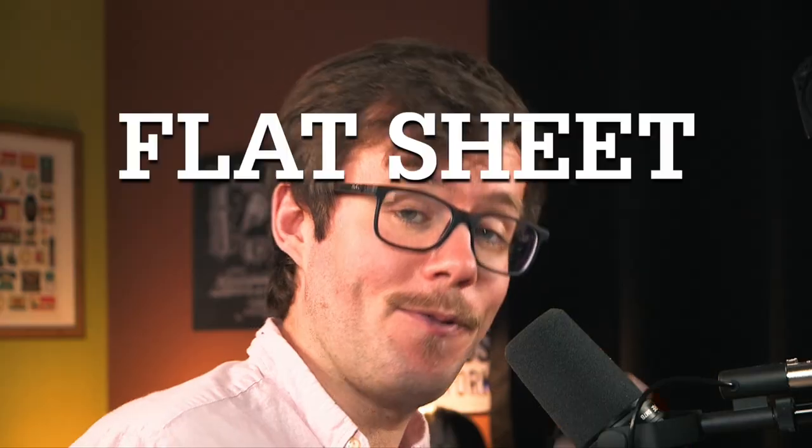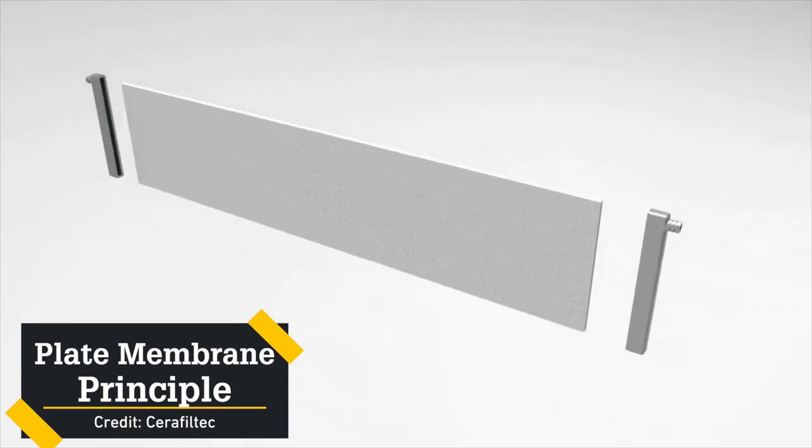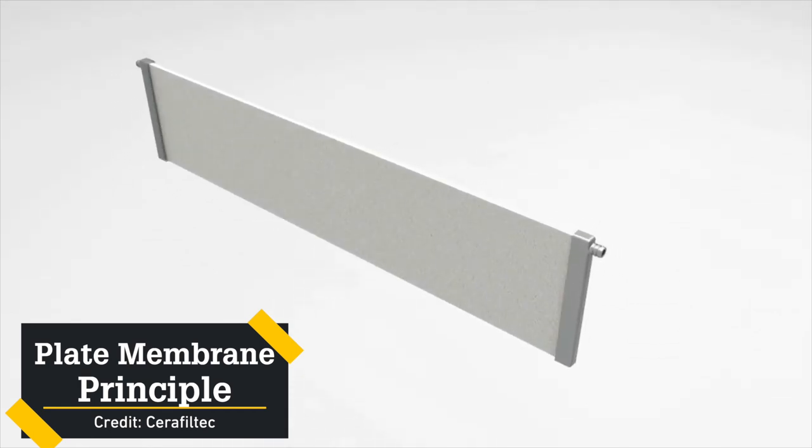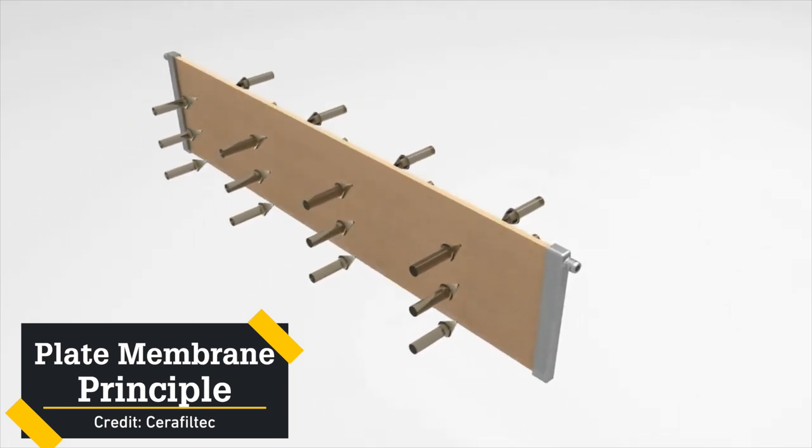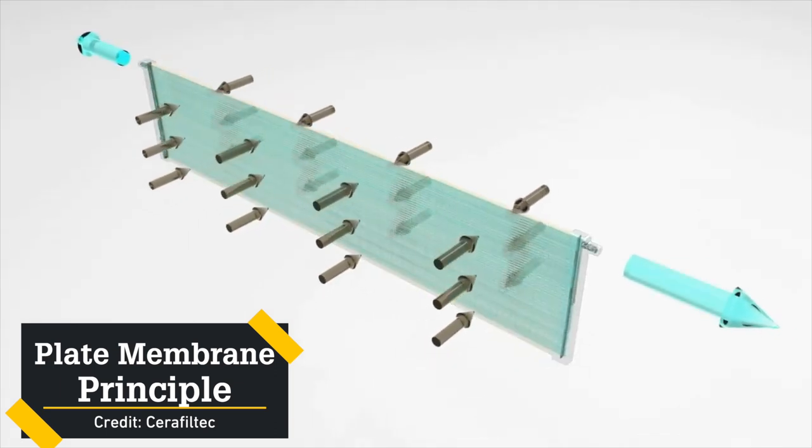Flat sheet membranes, sometimes called plate and frame membranes, are built around a series of flat sheet membranes and support plates. The water to be treated passes between the membranes and adjacent assemblies, with the plate supporting the membrane and providing a channel for permeate to flow out. This design enables straightforward modularity, allows low footprints, and optimizes hydraulic design — though it is said to be subject to clogging and harder to backwash.